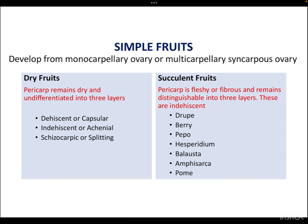Simple fruits are those which develop from a monocarpillary ovary or multi-carpillary syncarpus ovary. Monocarpillary means a flower which contains only one female organ, that is the pistil. Multi-carpillary means the flower bears multiple female parts that are fused together — that is what we call multi-carpillary syncarpus ovary. Simple fruits have further classification: the first is dry fruits.